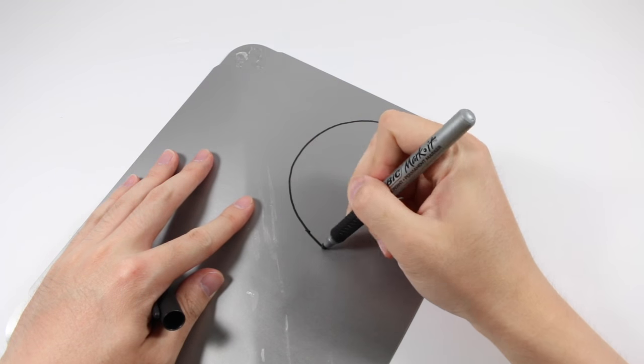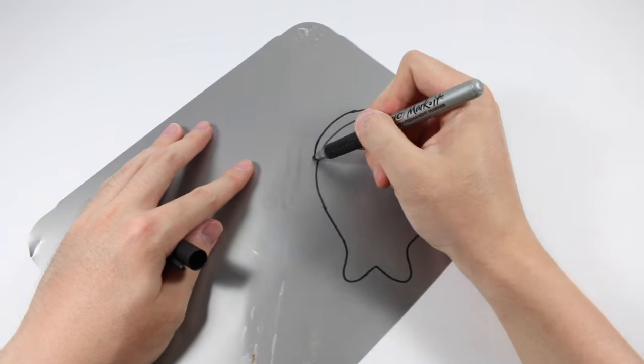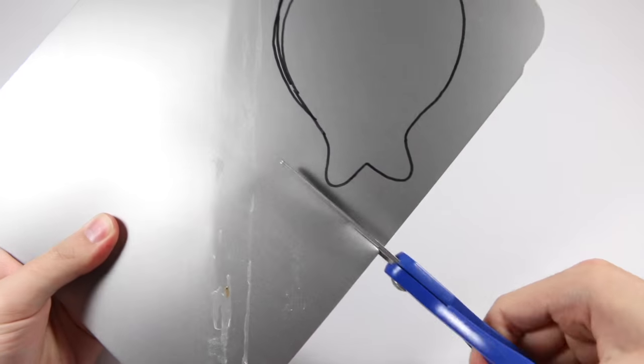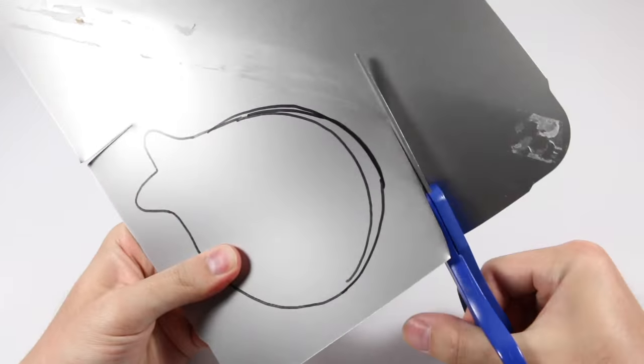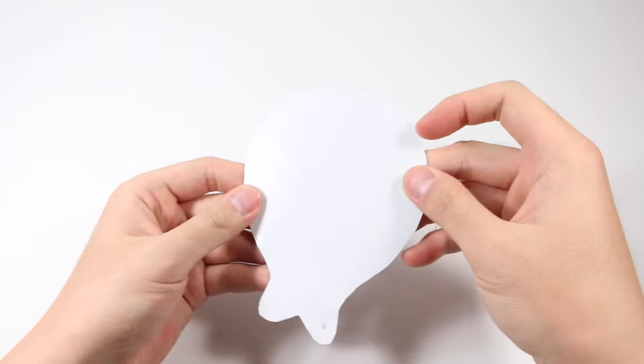The whiteboard will be the whale shark's belly, so I'm tracing out the shape on the back with a sharpie and carefully cutting it out with scissors. Make sure you're super careful because this is metal and it's very painful if you get scratched. It should look something like this.